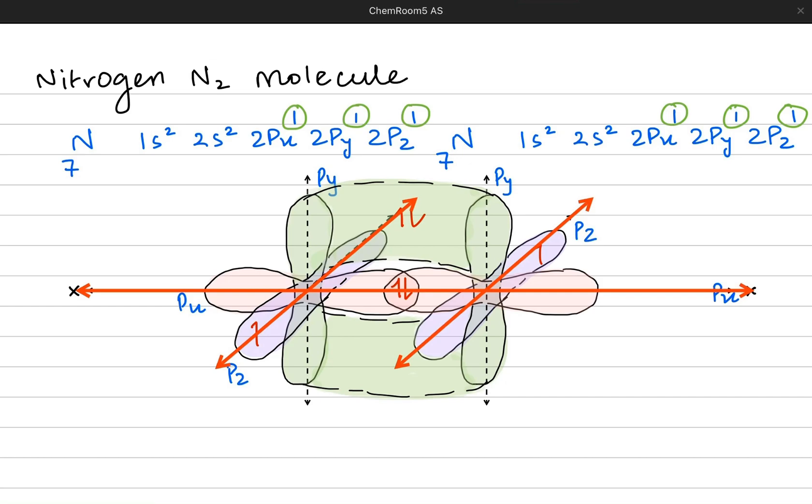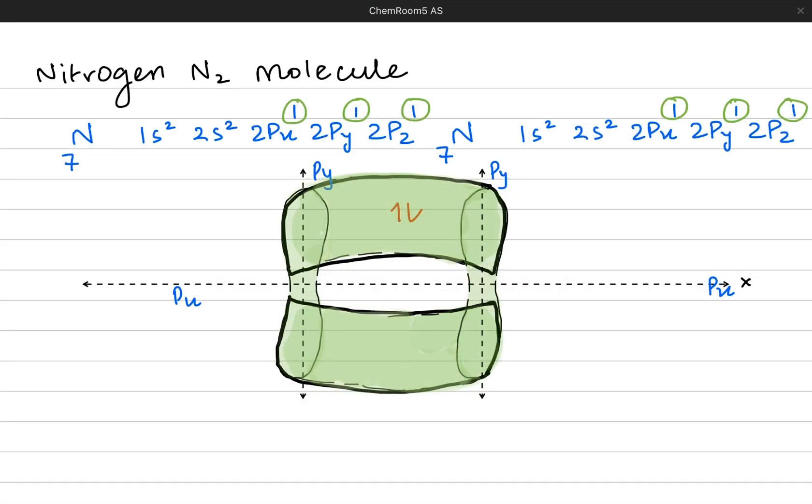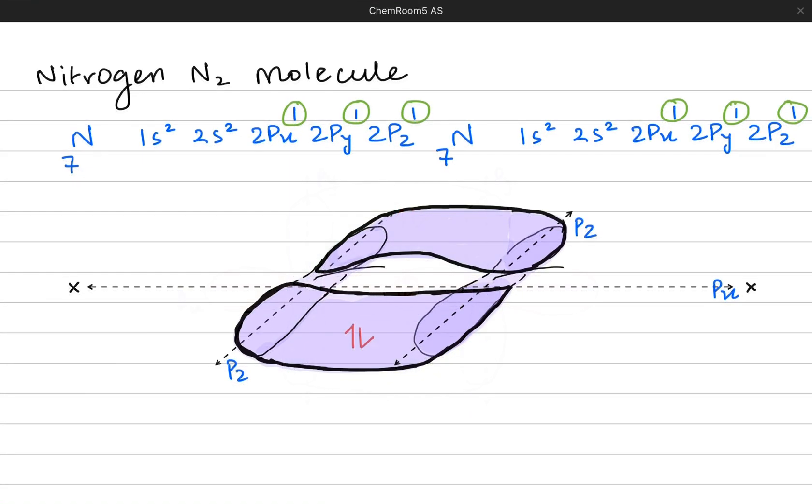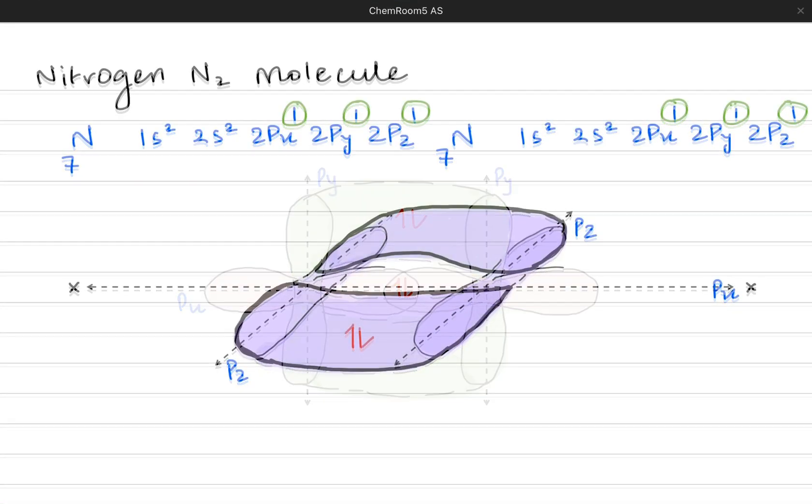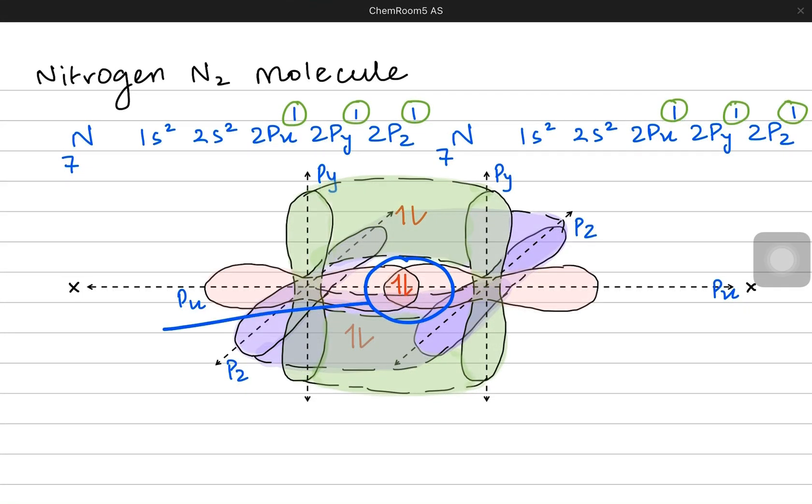Similar is the case with the Pz orbitals because they are also both parallel to each other, so they can also create a pi bond represented here by the purple shade, where the electron density is above and behind the sigma bond on the z plane. You can see that sigma bond is a very straight and directional region present on the internuclear axis while the Py pi bond is spread above and below the sigma bond. The purple region or the pi bond on the z plane is behind and above or in front of the sigma bond.